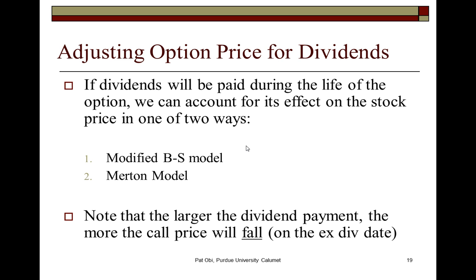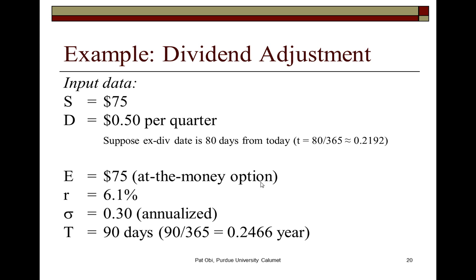In this example, we revisit our at-the-money option where S is 75 and E is 75. The underlying stock will pay a dividend of 50 cents per share — this is a quarterly dividend. We assume here that the ex-dividend date is 80 days from today, so annually speaking, that gives us the result shown.